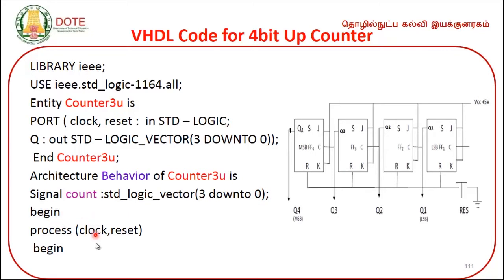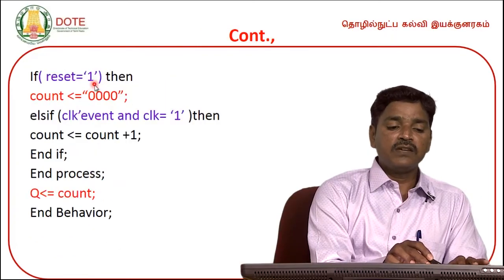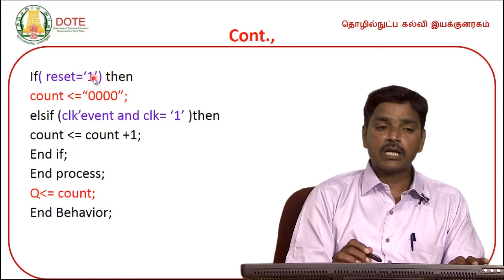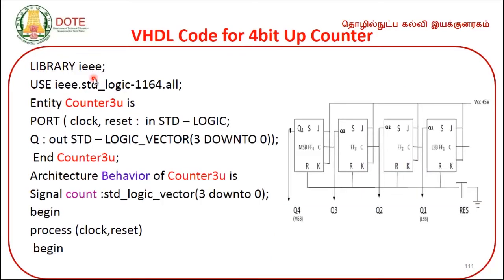We write 'begin', then 'process'. Inside the process, the sensitivity list includes clock and reset: process(clock, reset). Then 'begin' again. Using an if condition — if reset equals 1, the initial output is: Q1=0, Q2=0, Q3=0, Q4=0.